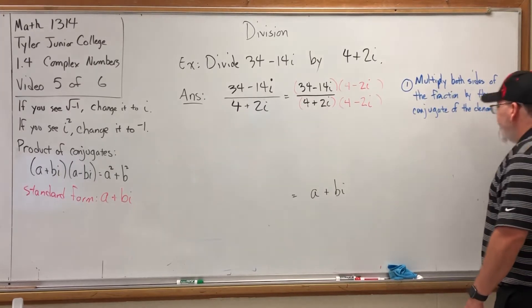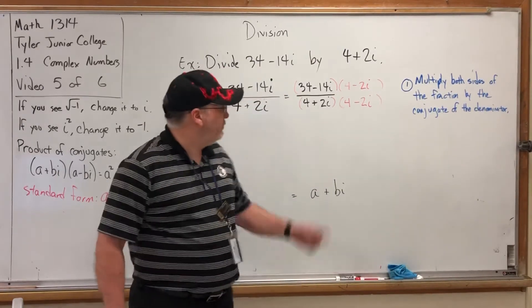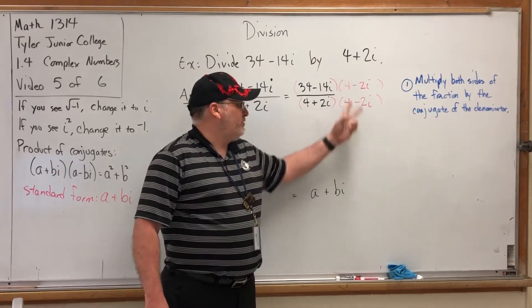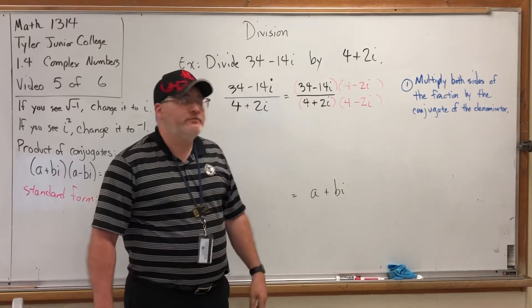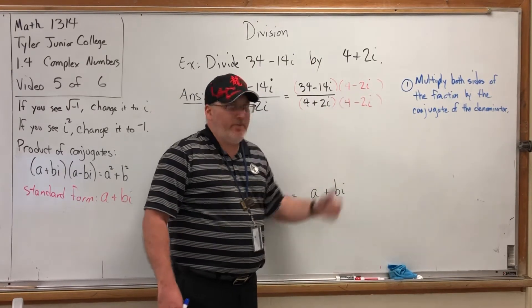Or in English: change the sign in the middle of the bottom of the fraction and multiply both sides by that new number. So change 4 + 2i to 4 - 2i and multiply both sides by it.